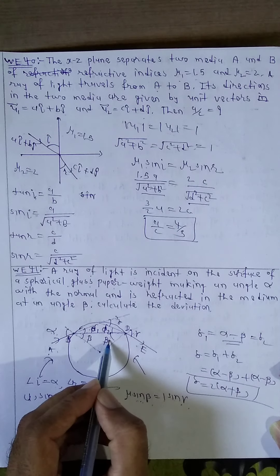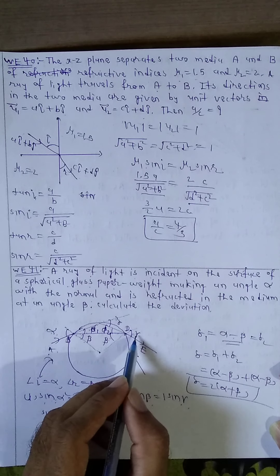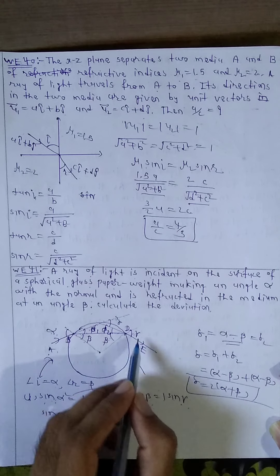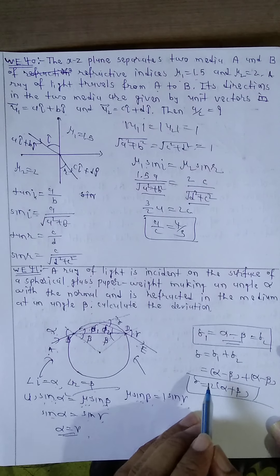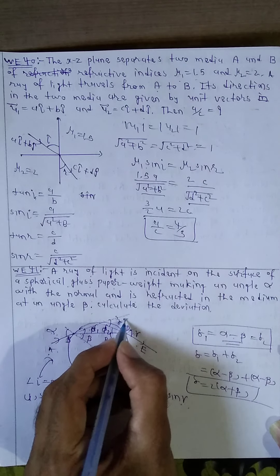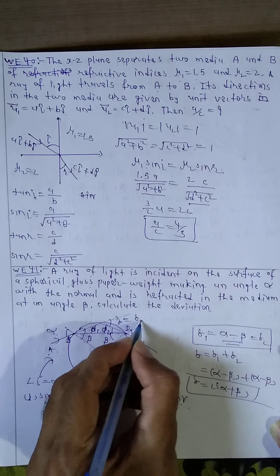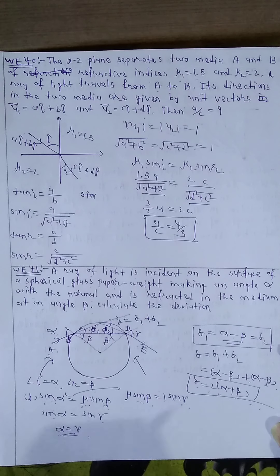Now first deviation del 1 equal to alpha minus beta. And gamma equal to alpha, also del 2 equal to gamma minus beta. Therefore del 1 equal to del 2 equal to alpha minus beta. Now total deviation del equal to del 1 plus del 2, alpha minus beta plus alpha minus beta. Therefore del equal to 2 alpha minus beta.